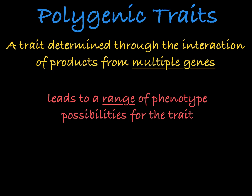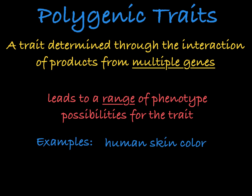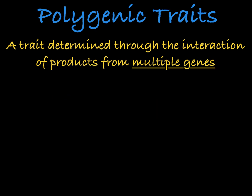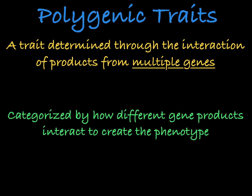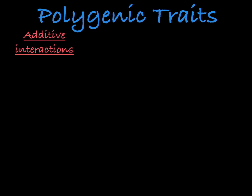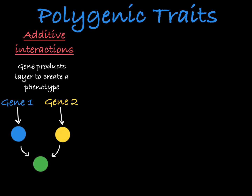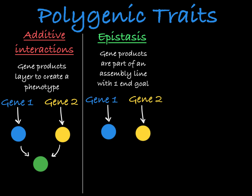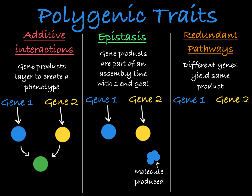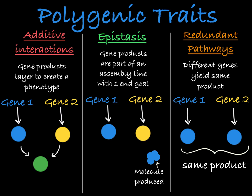You can see this in common polygenic traits like human skin color, eye color, and height. Polygenic traits can be categorized by how the genes and their products interact with each other. Some polygenic traits result from additive interactions, where the products of two genes layer on top of each other to create a new phenotype. Some polygenic traits result from epistasis, where gene products are often part of an assembly line that produces or destroys a molecule. And some polygenic traits are the result of two or more redundant pathways that have the same product.